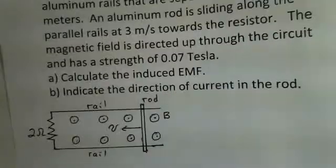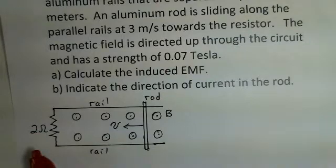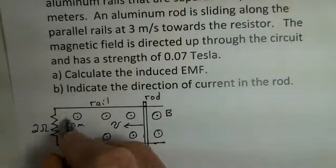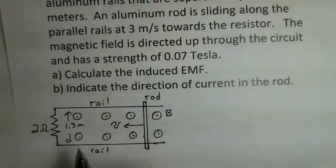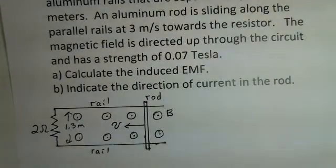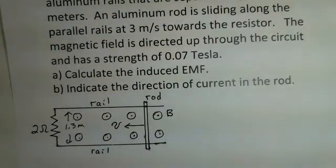Perhaps you have a sketch that looks like this: 2 ohms over on the left, the two rails are here. We have 1.3 meters - I might add that to my sketch for the width between the two rails, and our rod is tracking back to the left side.